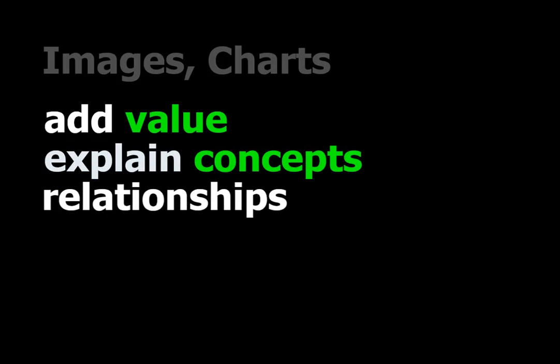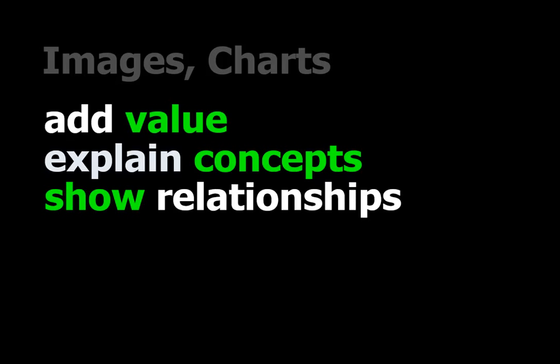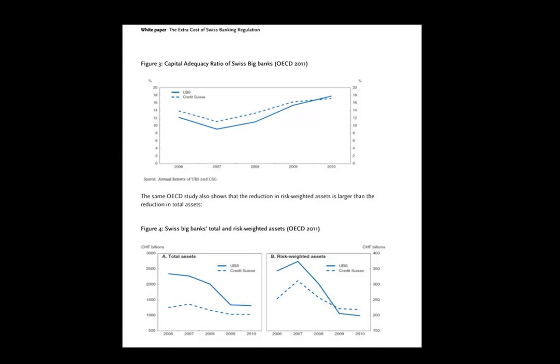As regards charts and images, if you're going to use them, add value — avoid just putting in eye candy. The main thing is to help the reader understand concepts and show relationships between things. These are some nice examples of tables and charts that are not just easy on the eye but of real use to the person reading the document — they illustrate what's been discussed in a nice way. It's important to balance the image and text ratio, otherwise people get tired.